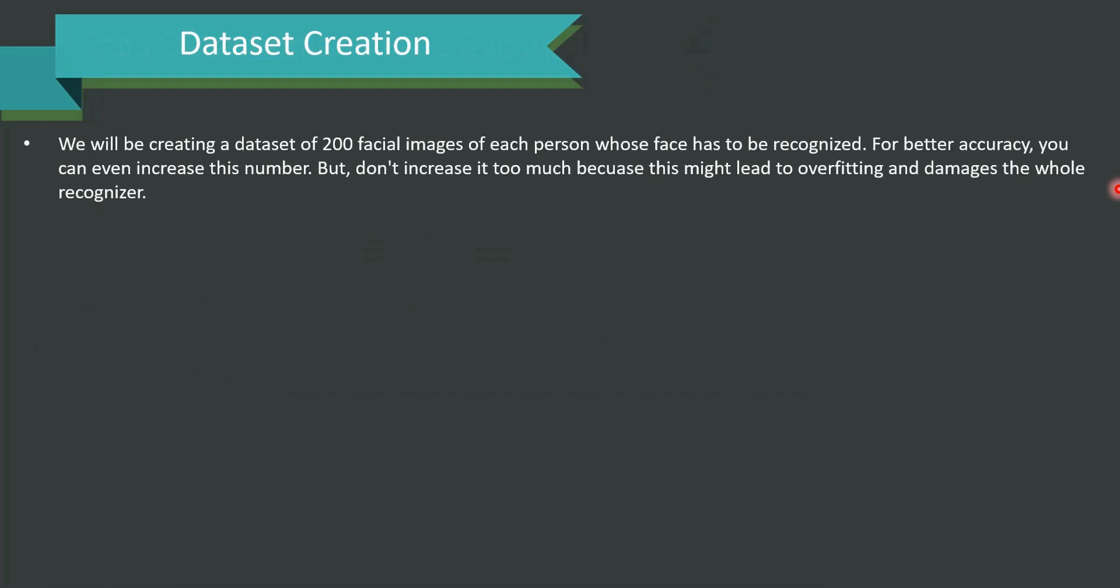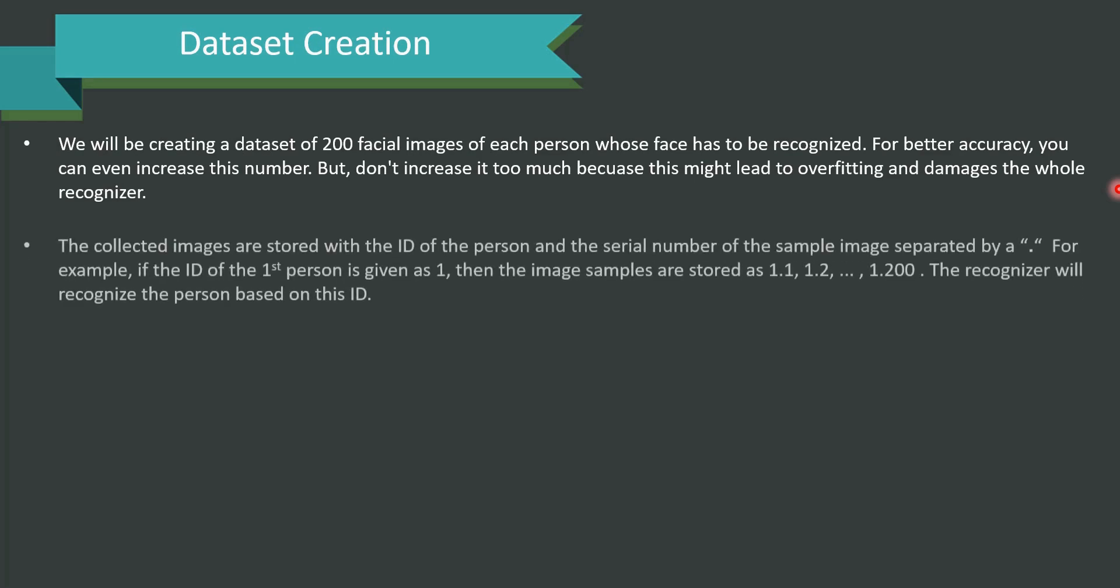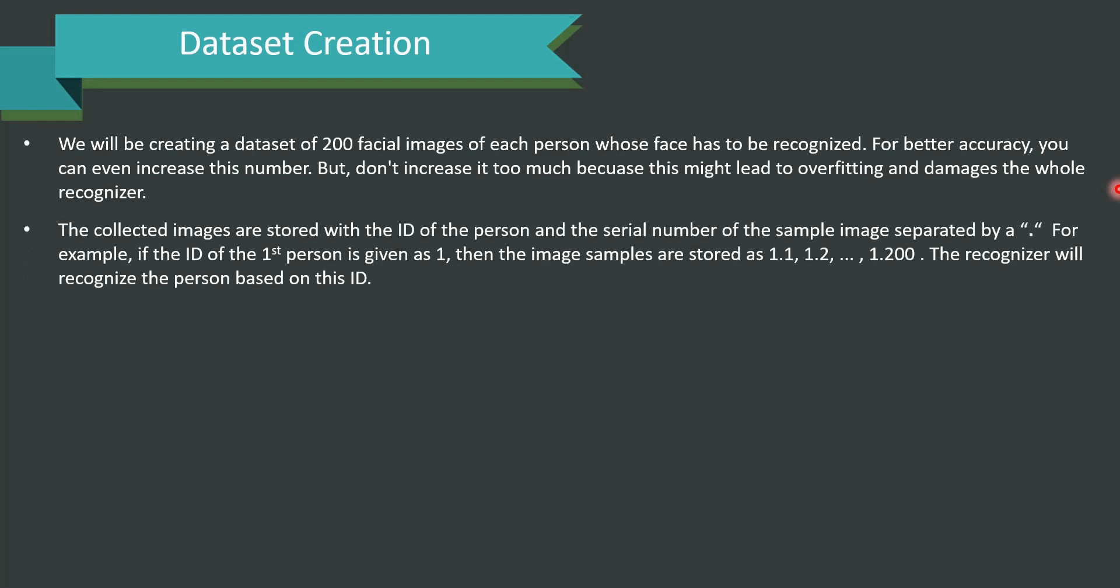Dataset Creation. We will be creating a dataset of 200 facial images of each person whose faces are to be recognized. For better accuracy, you can even increase this number but make sure you do not increase it too much because it could lead to overfitting and damages the whole recognizer. The collected images are stored with the ID of the person and the serial number of the sample image separated by a dot. For instance, if the ID of the first person is given as 1, then the image samples are stored as 1.1, 1.2, 1.5 like this. The recognizer will recognize the person based on this ID.